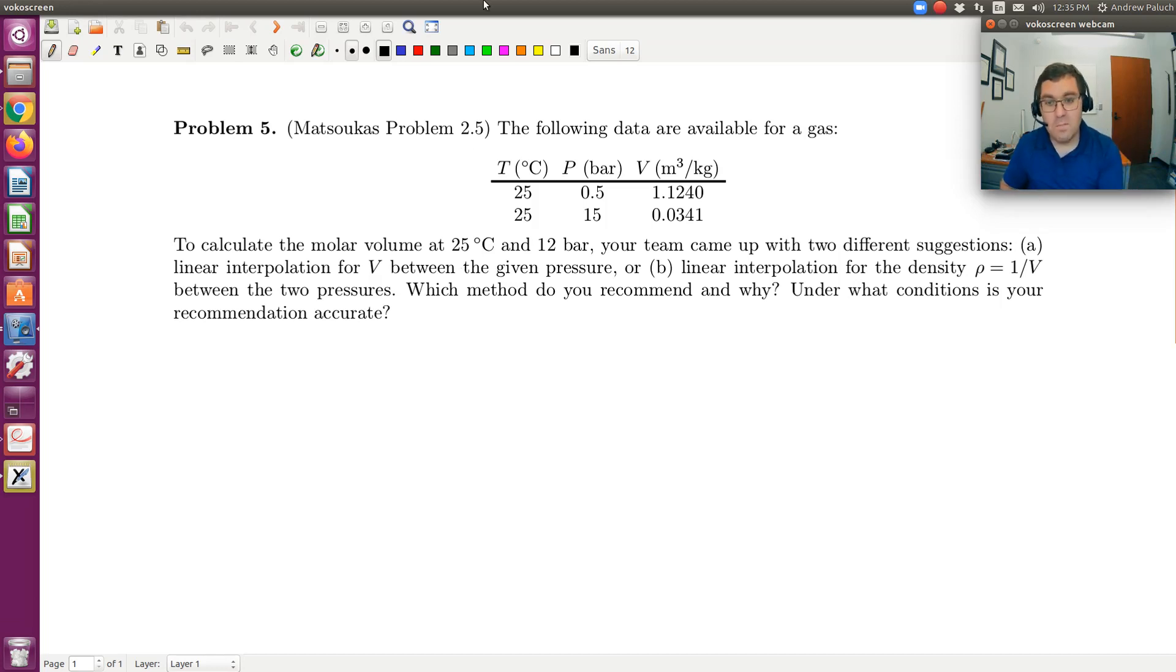The first thing that comes to mind is if I were to assume an ideal gas, so if we assume ideal gas, the ideal gas equation of state is PV is equal to RT. So P is equal to RT over V. So looking at our data here, R is constant and T is constant.